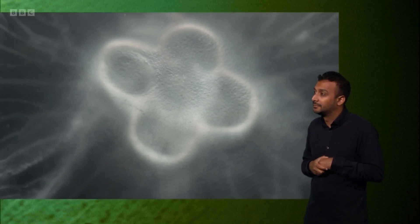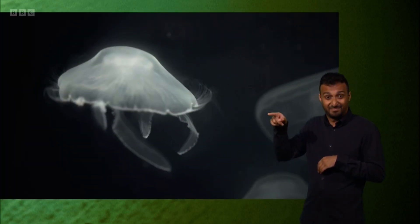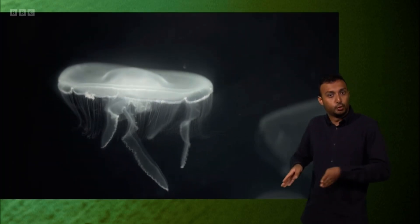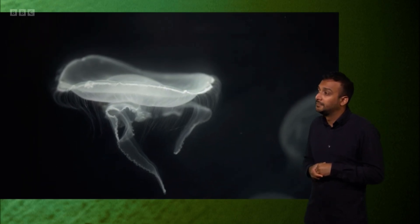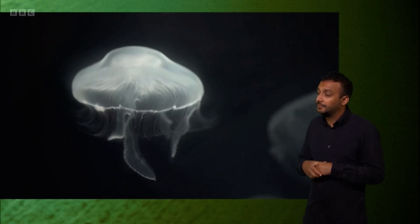The rings in the top of the bell are their reproductive organs. With every contraction, they propel themselves through the water.